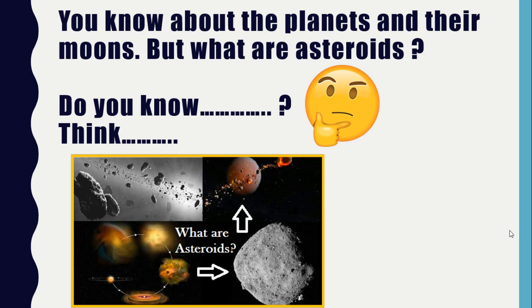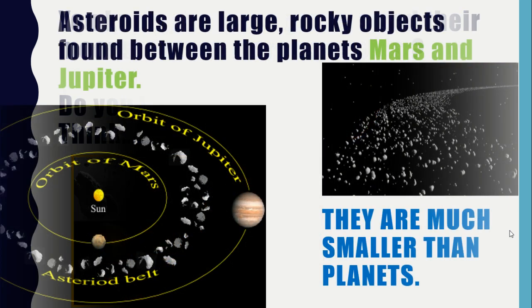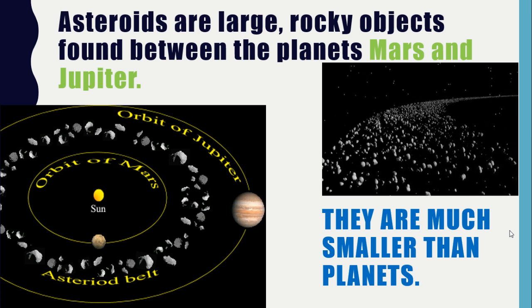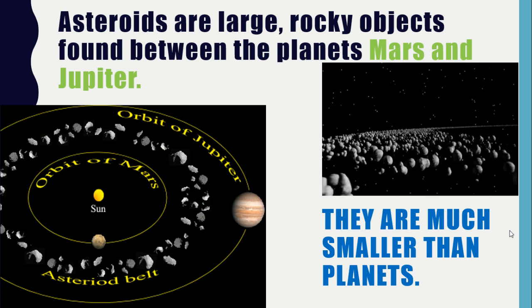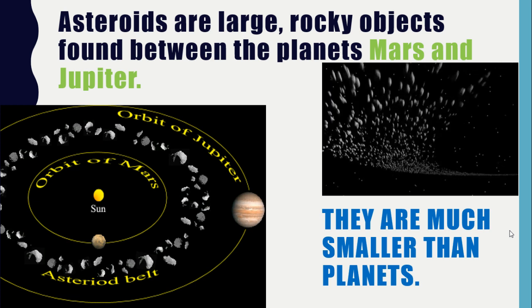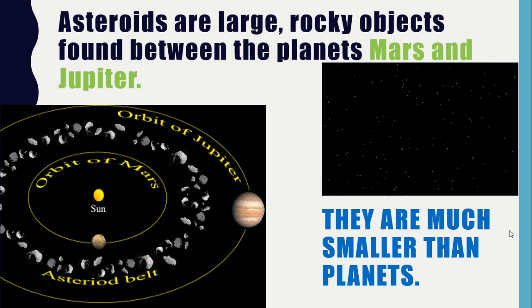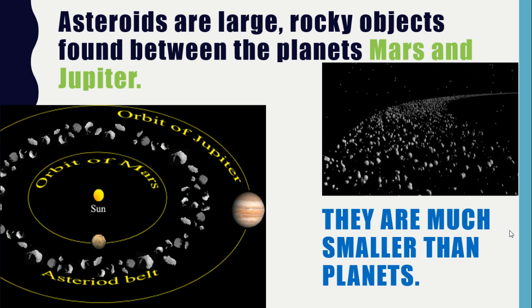You know about the planets and their moons, but what are asteroids? Asteroids are large rocky objects found between the planets Mars and Jupiter. They are much smaller than planets.